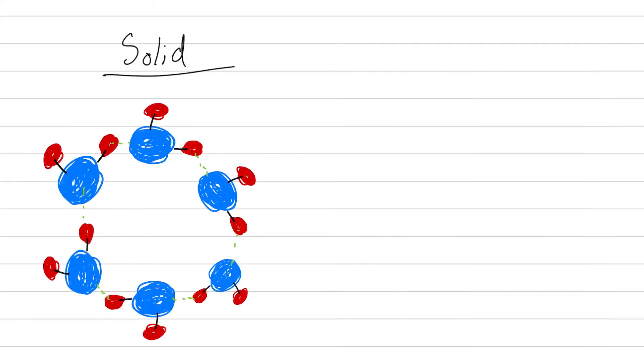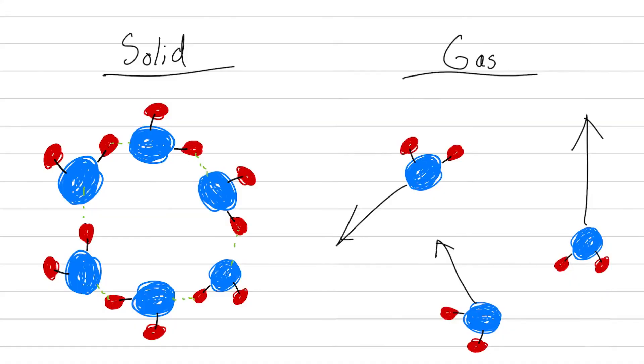How fast these vibrations are determines what state the water will be in. If they're slow, the molecules will lock together into a crystalline structure and form a solid — you know, ice. But if they're moving really fast, they will bump into each other a ton and then spread out like a gas — steam. One of the big points here is that for a molecule of water to evaporate, it needs to be moving fast enough that it can escape from being a liquid. It just needs enough energy individually to become a gas.